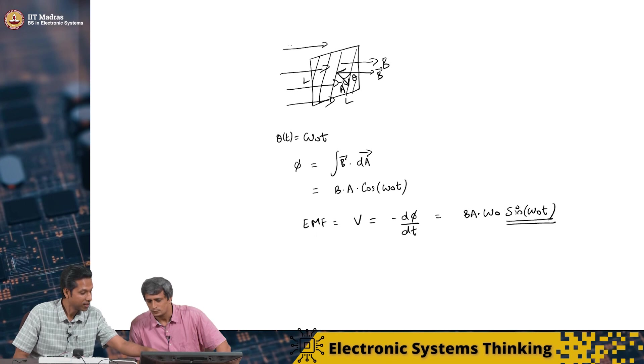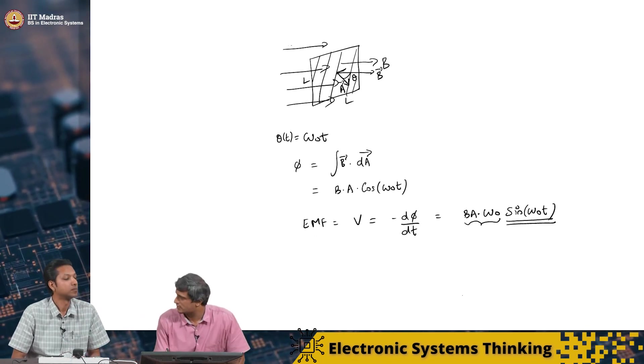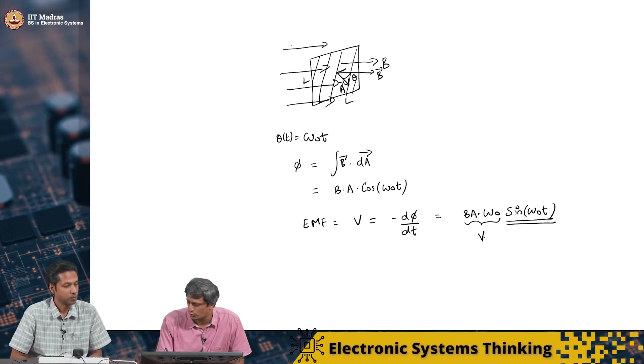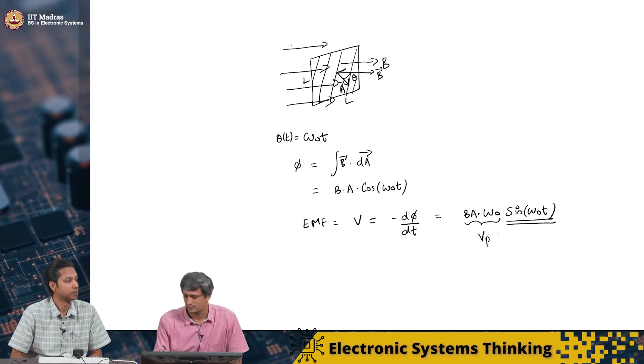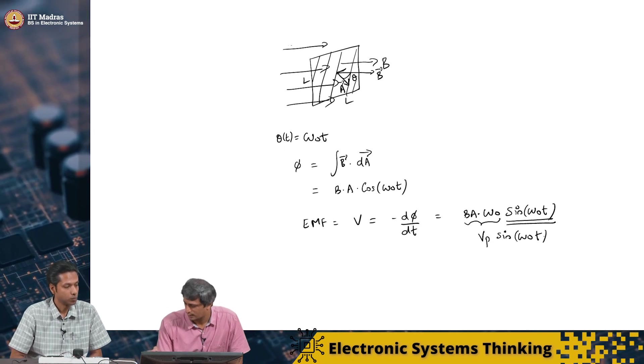And the maximum voltage is decided by. Yes, the maximum voltage therefore, will be decided by this right. So, this will be the amplitude V P sin omega naught T. So, in the next lecture we will actually look at the properties of these sine waves and link it to earlier experiments that we did as well. Thank you. Thank you.